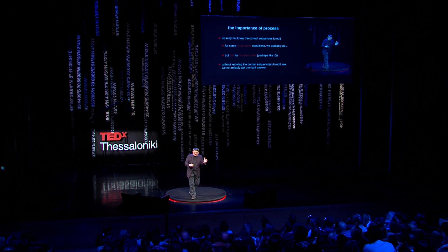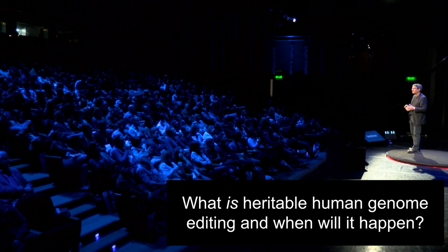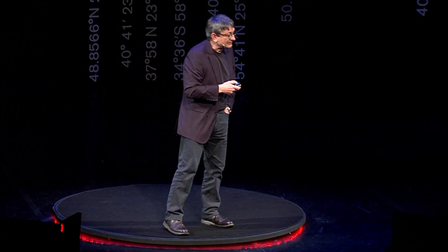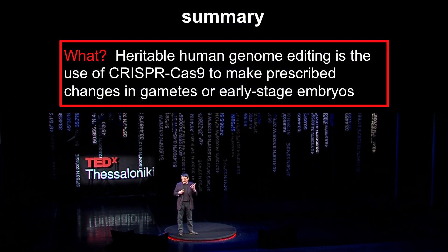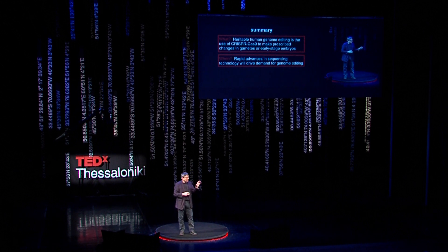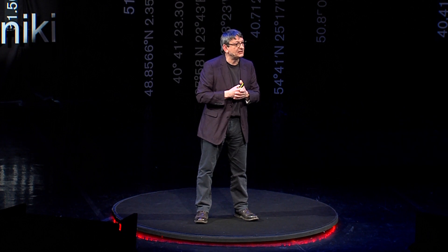Returning to our opening questions — what is heritable human genome editing and when will it happen? Heritable human genome editing is the use of the CRISPR-Cas9 system to make prescribed changes in gametes — sperm or egg — or early embryos, such that those changes are transmitted to future generations. As for when: rapid advances in sequencing technology will drive demand for editing, but technical, legislative, political, and social considerations may push human genome editing years, perhaps even decades, into the future.